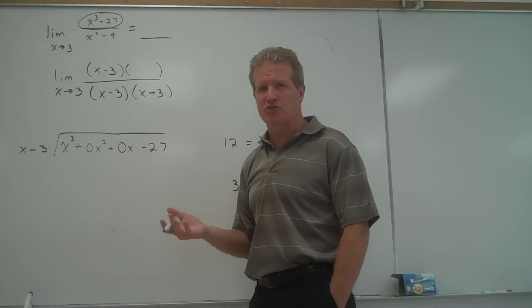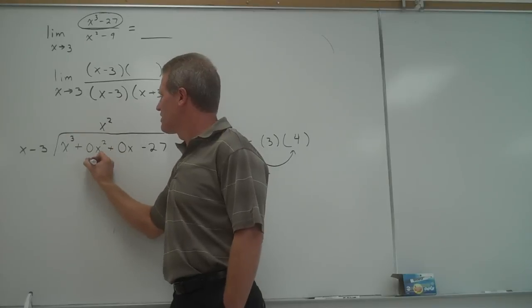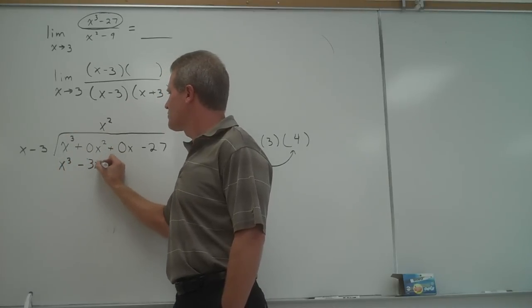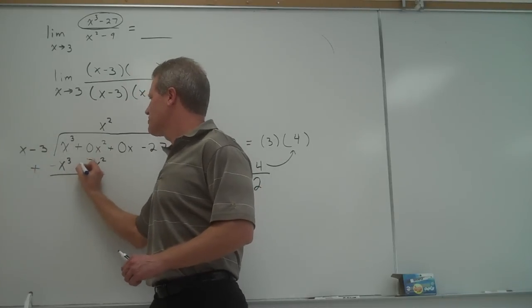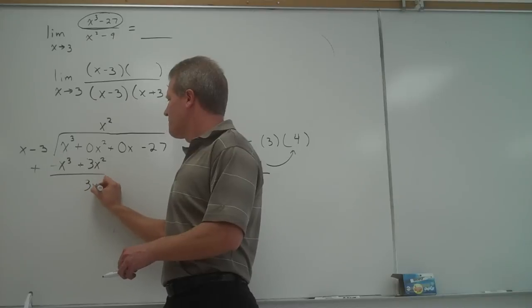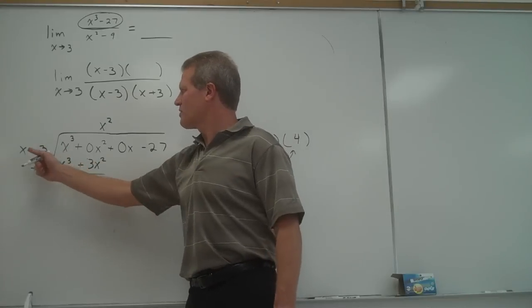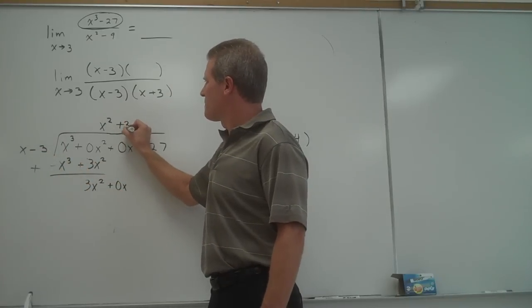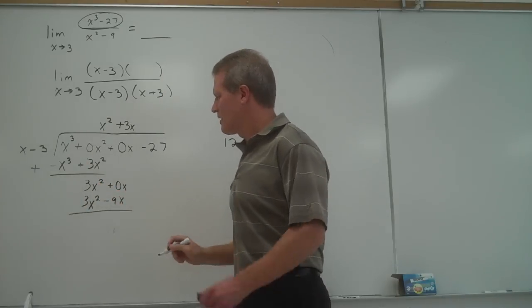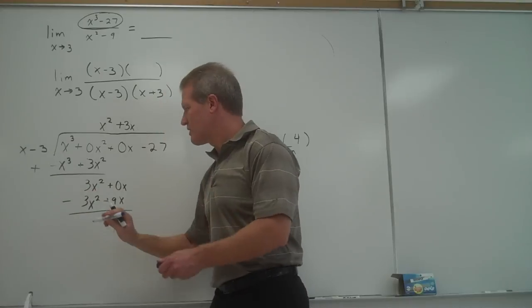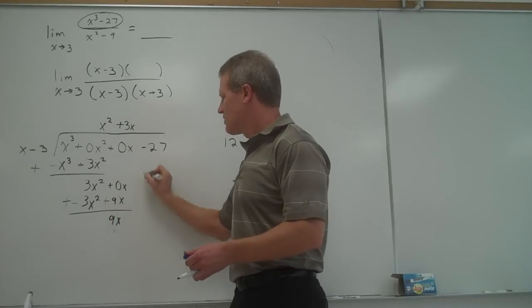I'll show that real quickly, although I'm not sure you're going to want to use that method. x goes into x cubed x squared times, so I multiply, I get x to the third minus 3x squared. Then I'm going to subtract. Instead of subtracting, I add the opposite, which gives me 3x squared here. Bring down the 0x. Next, 3x squared divided by x would be 3x.